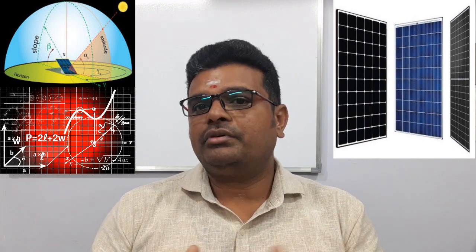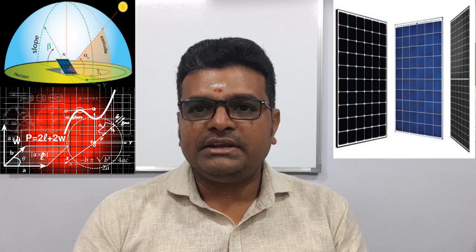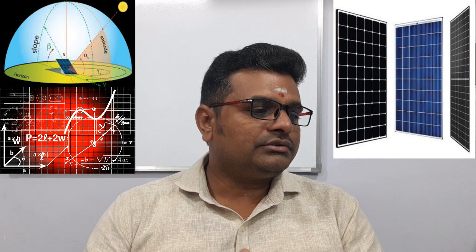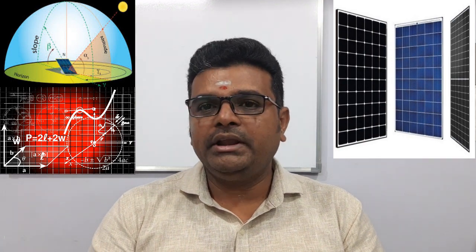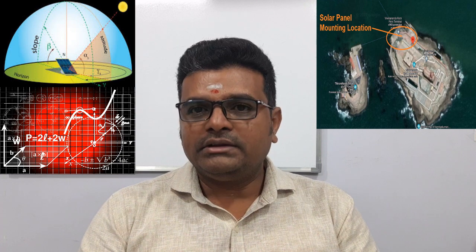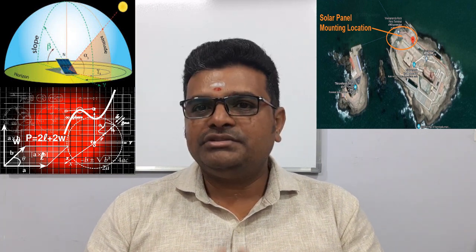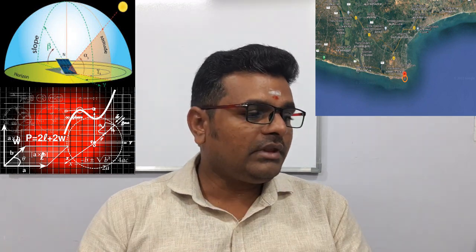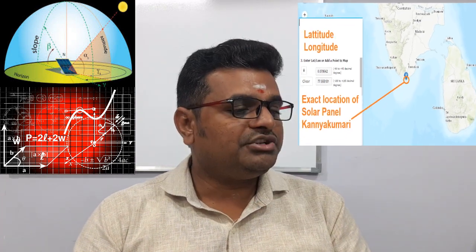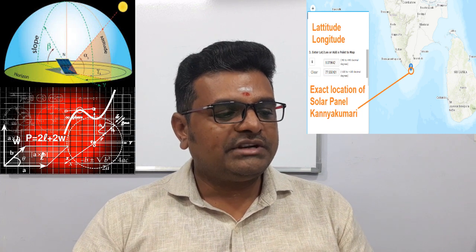There are a lot of design criteria to take into account when you are considering installing the system for the next 25 years. As I said before, you could be designing for two, five, ten, or twenty years — it's up to you, purely based upon your budget. Today we are going to see the solar panel design for Kanyakumari, one of the famous tourism spots in India located in Tamil Nadu. Its latitude is 8.07 and longitude is 77.55.